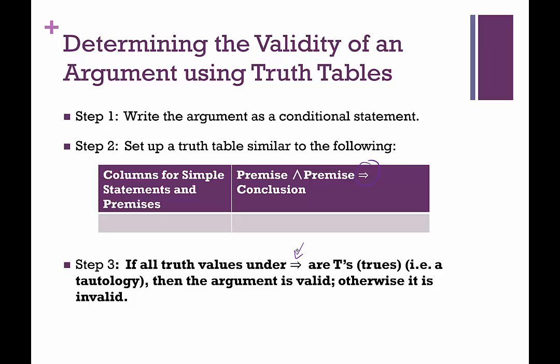We use the implication symbol for arguments rather than just the single arrow. So if all truth values under the implication are trues — i.e., a tautology — then the argument is valid; otherwise it is invalid. We must have a tautology in that final column. Also note that the column right before the final column will be the conjunction of the premises, setting up the hypothesis for that final column.